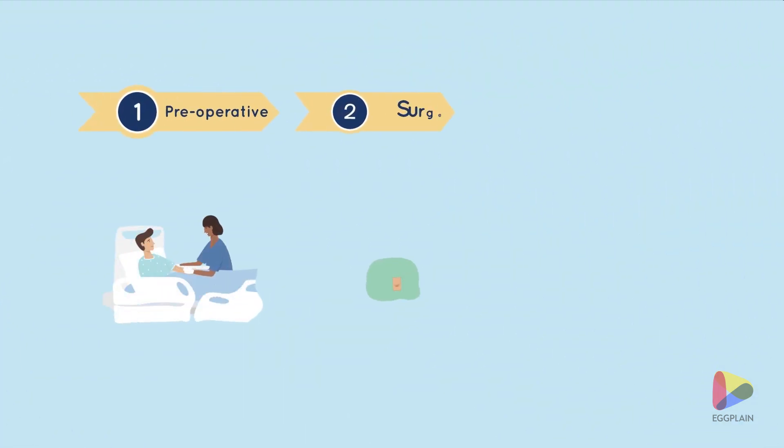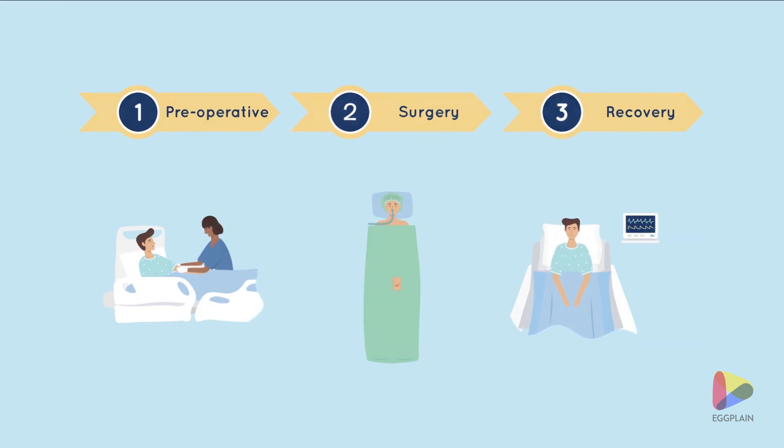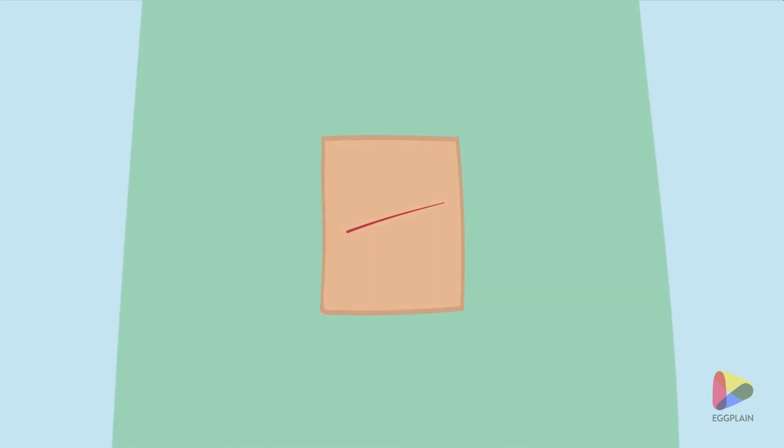The operation usually takes between 30 and 60 minutes. You will then be in the recovery room for a few hours. The incision or abdominal incisions will be covered with gauze bandages and you will receive specific instructions on how to take care of the wound.